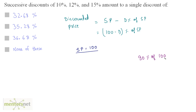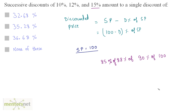This discounted price is again discounted by 12%. So we apply a discount of 12% on this discounted price: 100 minus 12 is 88, so 88% of that amount. Then on this amount, a discount of 15% is applied: 100 minus 15 is 85% of that amount.